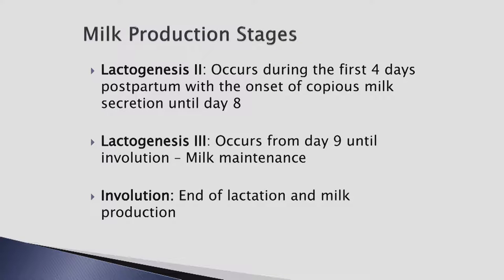Lactogenesis 2: These changes occur after the delivery of the placenta, resulting from the sharp decrease in progesterone and estrogen levels while prolactin levels remain high. The onset of copious milk secretion occurs between 30 and 96 hours after delivery of the placenta. This is typically known as the milk coming in. Most women feel increasing breast fullness around the second to third day after birth. Milk production changes in this phase from endocrine to autocrine control. In lactogenesis 2, milk production is controlled primarily by the rise and fall of hormones — endocrine control.